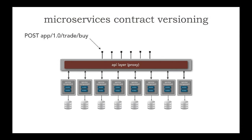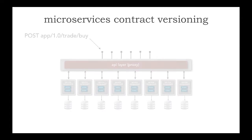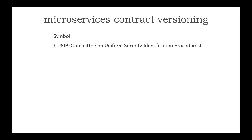When we talk about versioning, I'm going to use an example of buying some stock. When we end up buying or selling stock, we have to specify the kind of instrument. And we could do this in one of three ways: I can use a symbol, I can use something called a QCIP, or I can use something called a CDOL — the Stock Exchange Daily Official List.